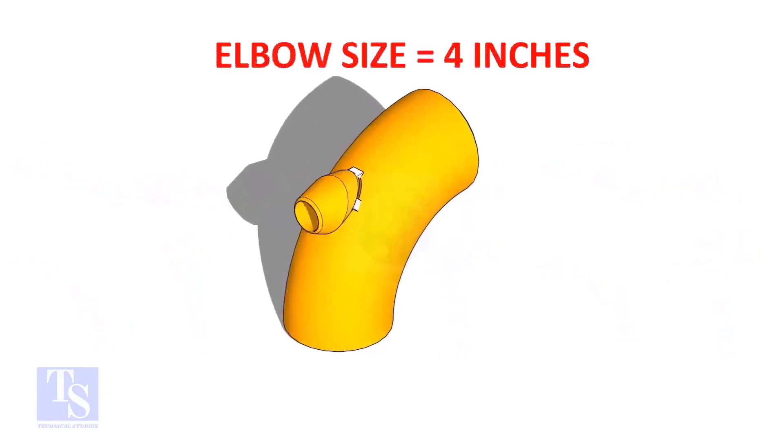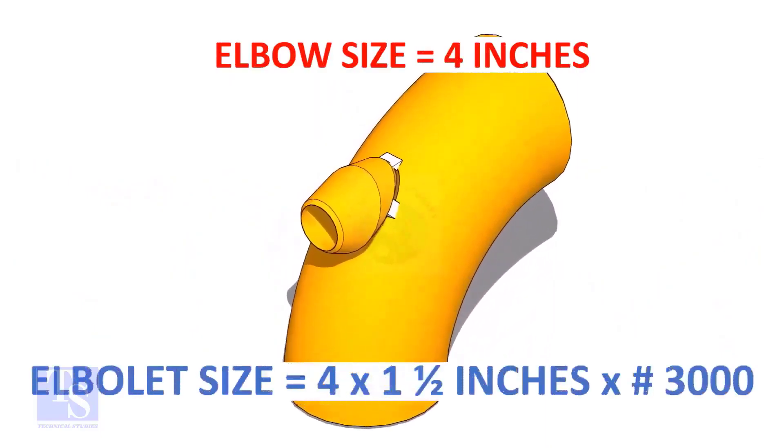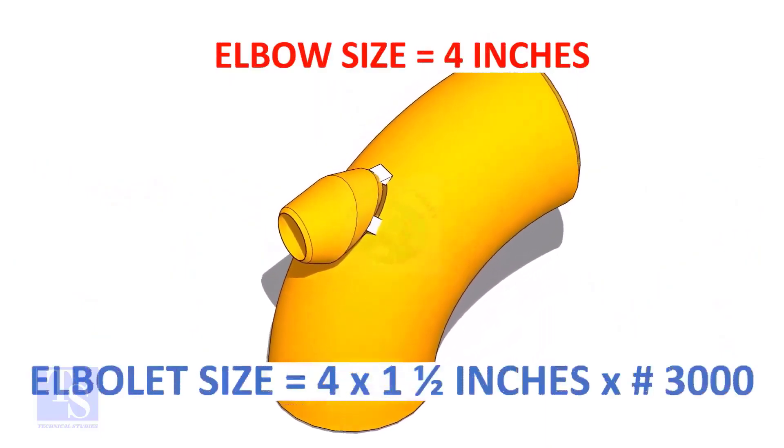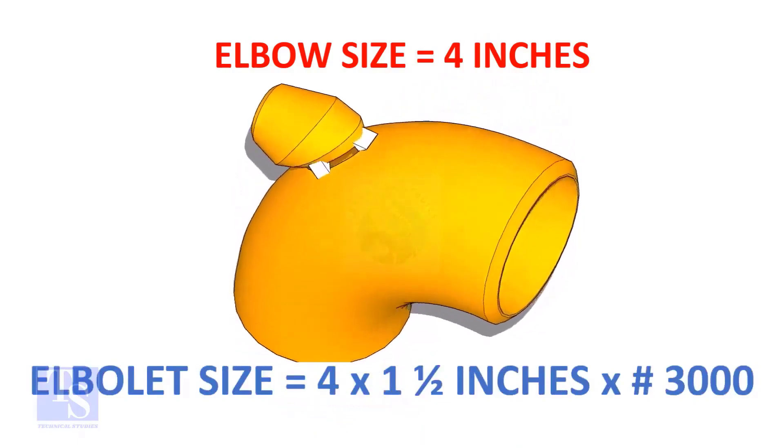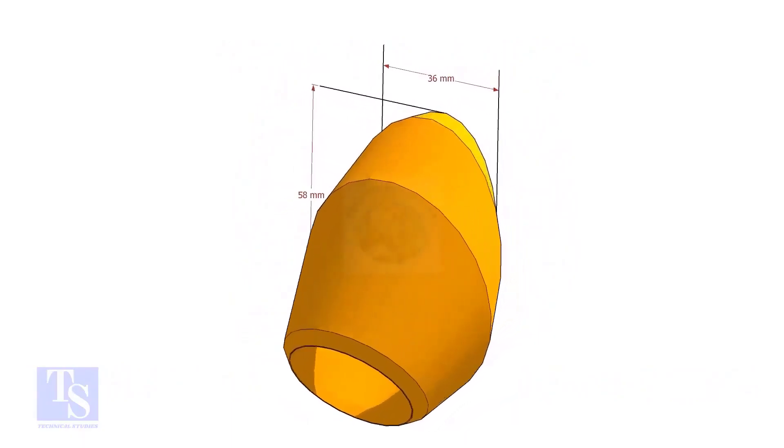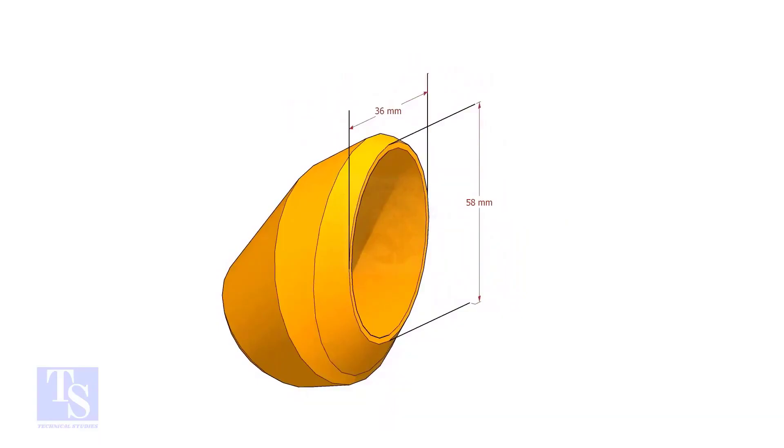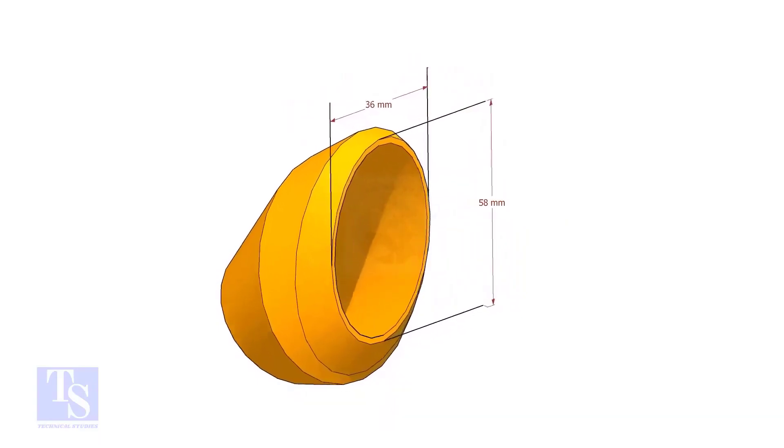The size of our elbow is 4 inch. And the size and rating of the elbowlet is 1.5 inch and 3,000 pounds respectively. The bottom opening size of the elbowlet is 36mm into 58mm. Please note down these dimensions.